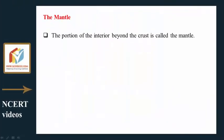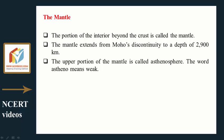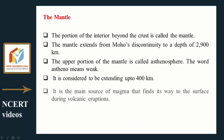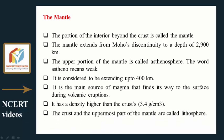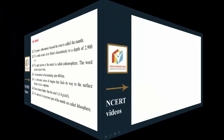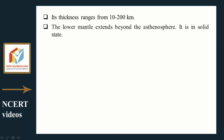The mantle: The portion of the interior beyond the crust is called the mantle. It extends from the Mohorovičić discontinuity to a depth of 2900 kilometers. The upper portion is called the asthenosphere — meaning 'weak' — extending up to 400 kilometers. It is the main source of magma that reaches the surface during volcanic eruptions, with a density of 3.4 g/cm³. The crust and uppermost mantle together are called the lithosphere, with thickness ranging from 10 to 200 kilometers. The lower mantle extends beyond the asthenosphere and is in a solid state.